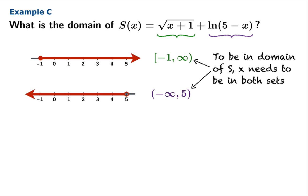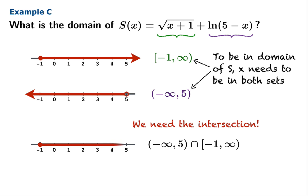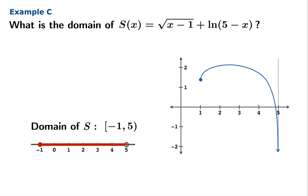This sounds like a job for the intersection operator. What is the set of points that are in both of these intervals? It would be the set of numbers from negative 1 to 5. Negative 1 including negative 1, not including 5. That's a semi-closed interval, which we could write this way. So our domain is this interval from negative 1 to 5. If you use some advanced software to get a nice graph, you'll notice that the graph does reflect the fact that the domain is the semi-closed interval from negative 1 to 5.